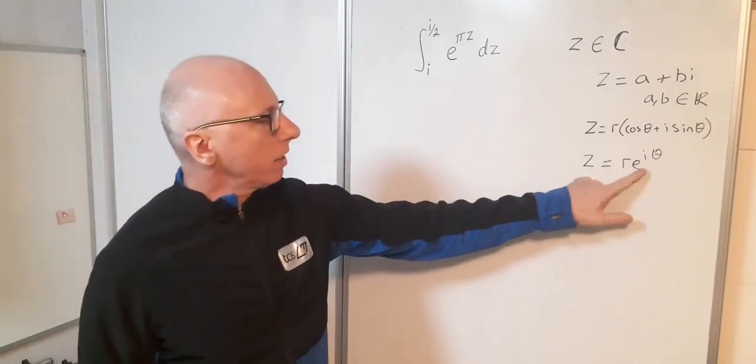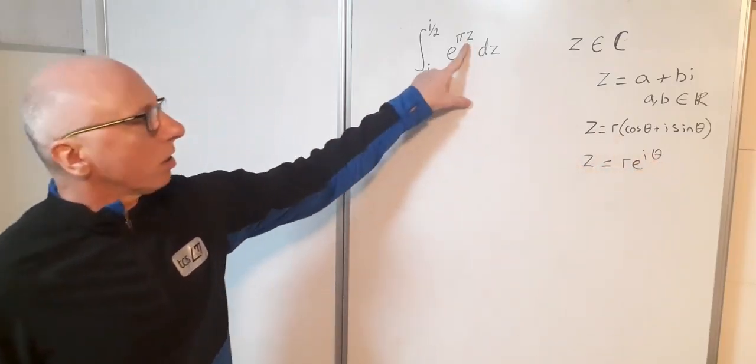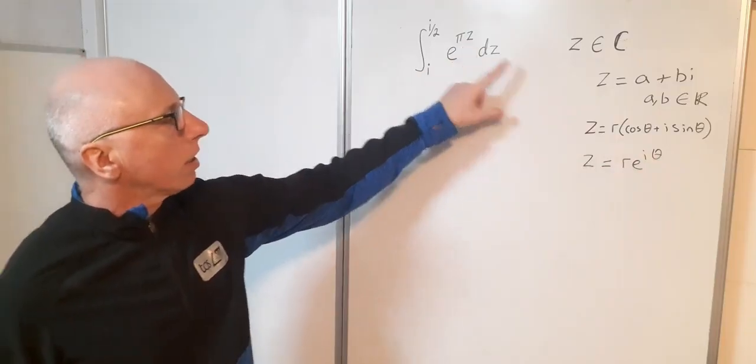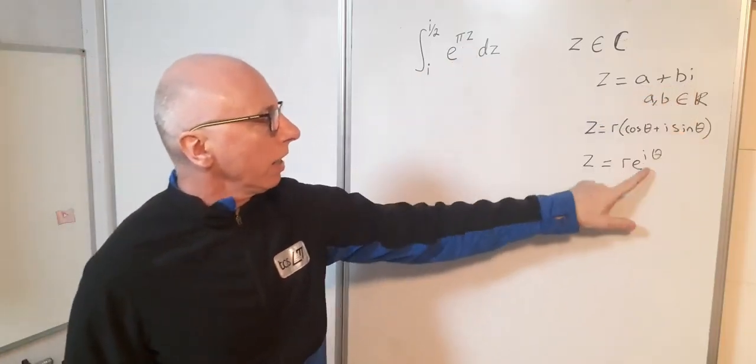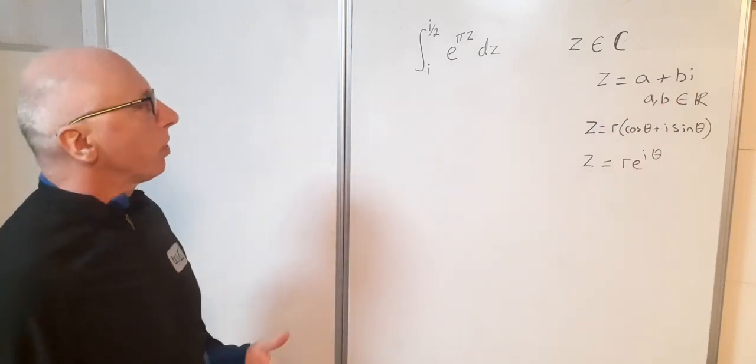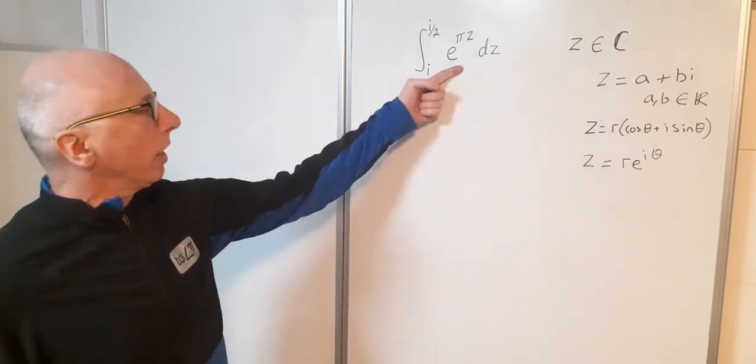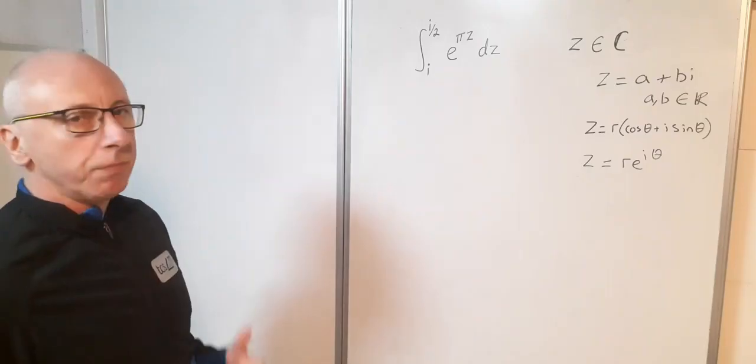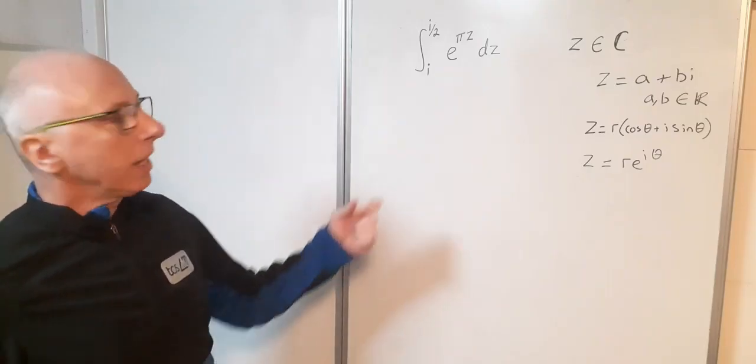What we see here, r e to the i theta, could be pretty similar to this here because I've got z is a plus bi, and that could be one way of representing it in terms of exponential form, so that's probably what we've got here. Now what we need to do first is find the integral of this.